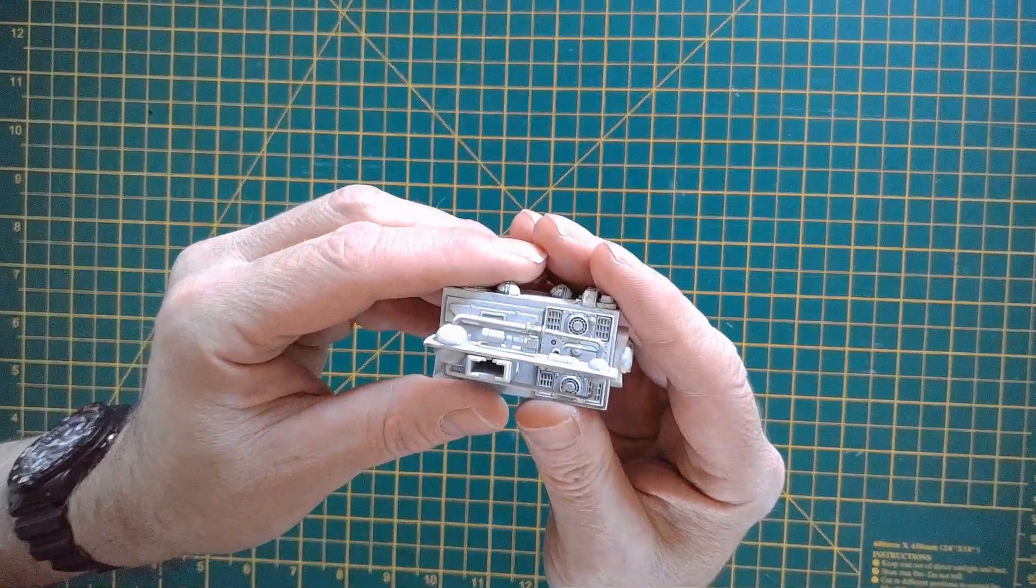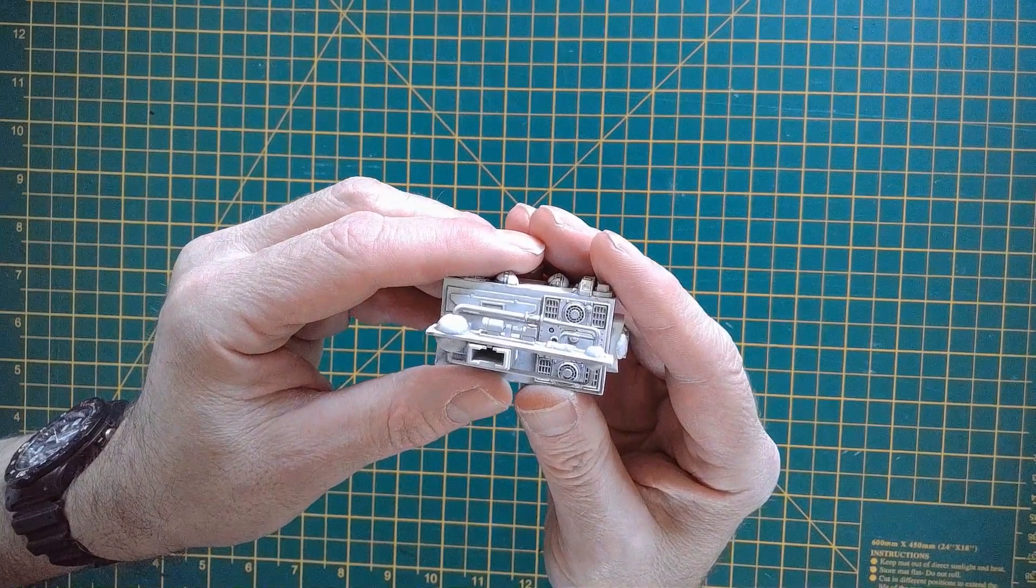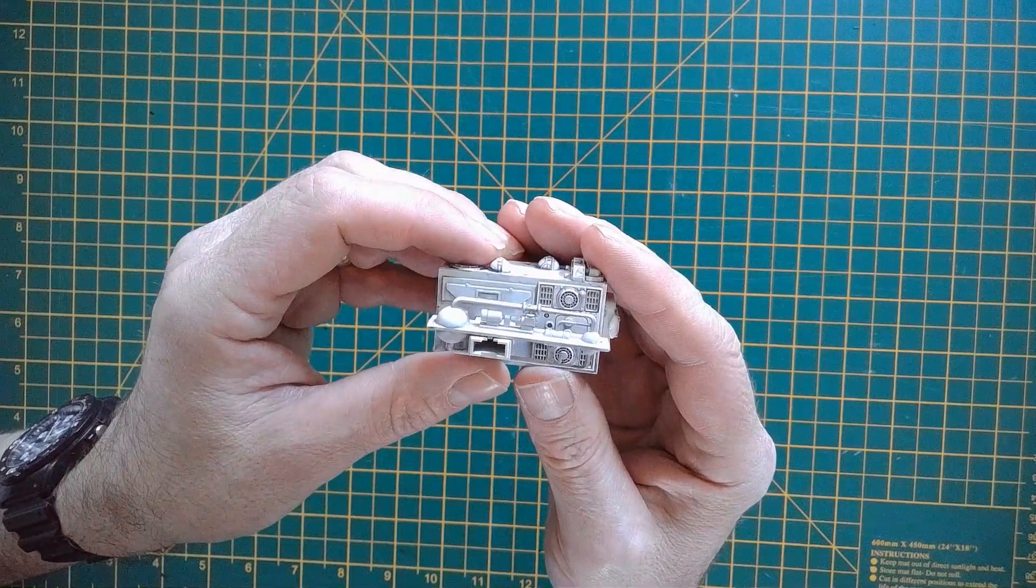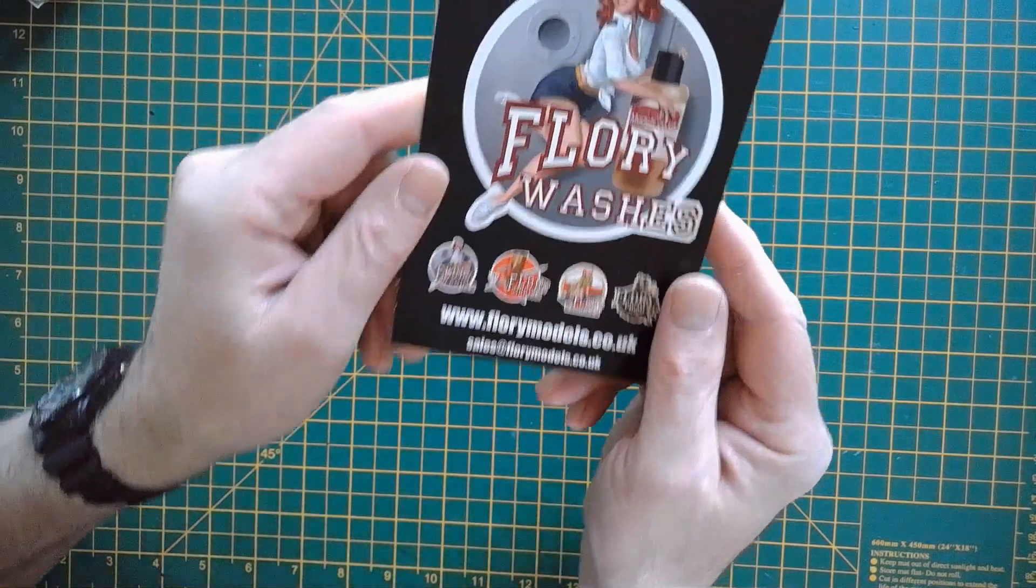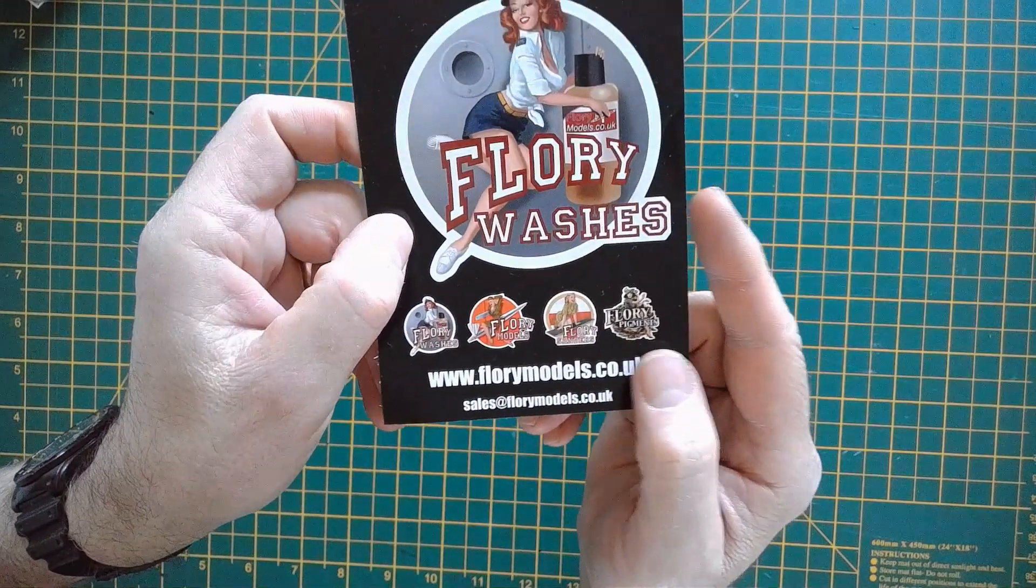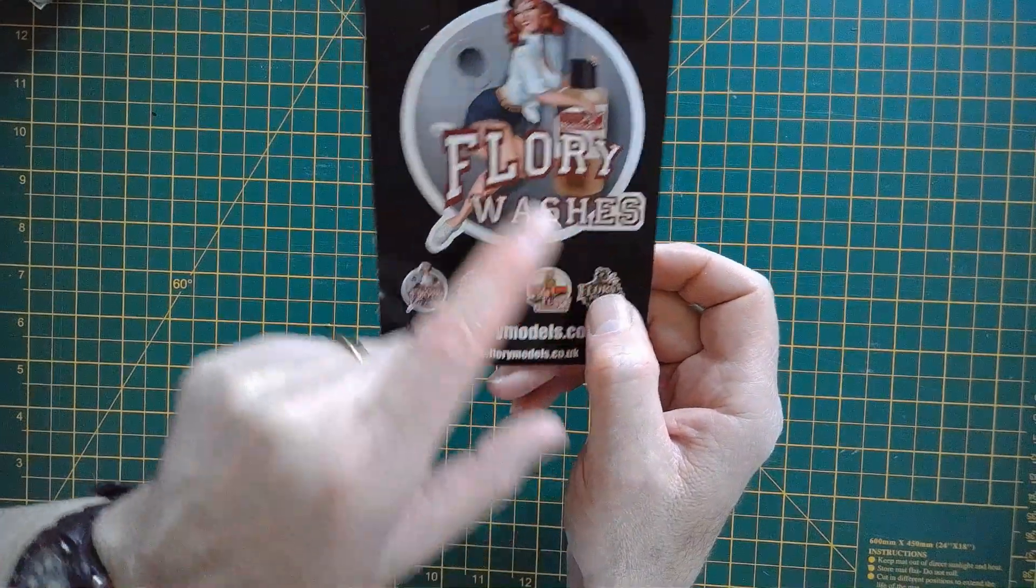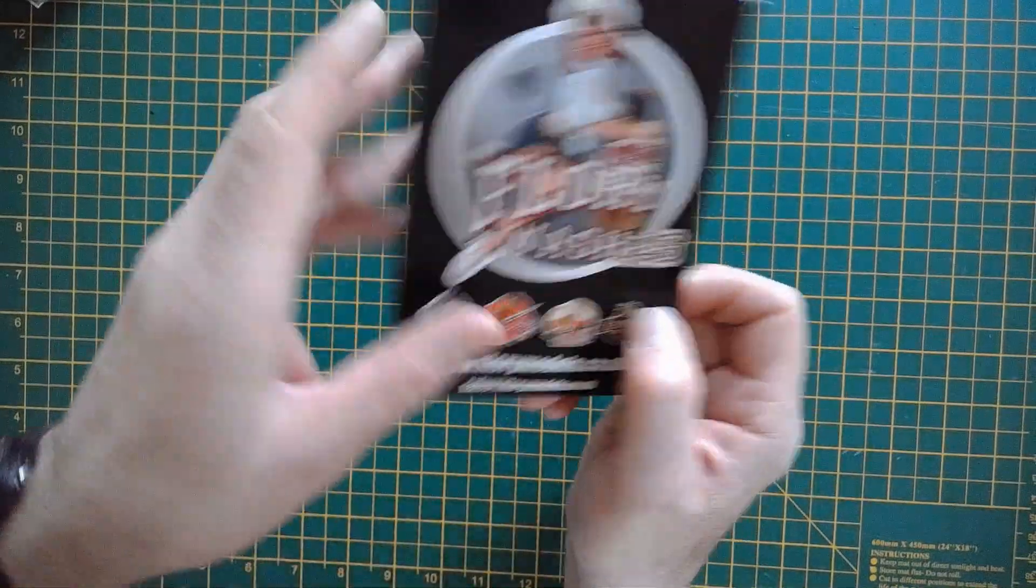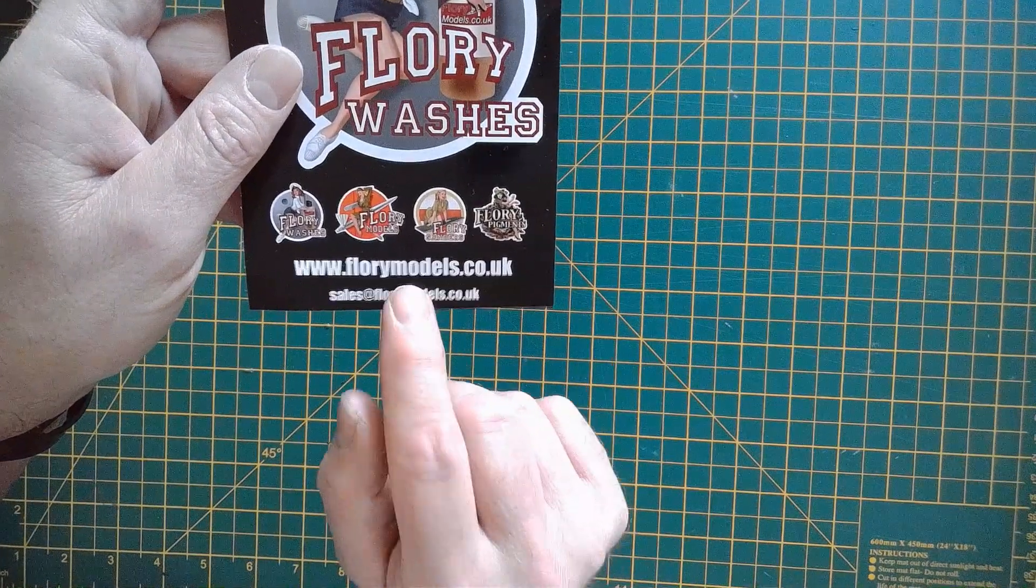This wash is a new product to me, and again thanks to my friend Mark. He used a product on his and it looked really good. This is a gray wash by a company, it's a Flory wash by a company called florymodels.co.uk. Basically, it's a pot of wash. Now it's not an acrylic, it's not an enamel, it's not an oil wash, it's not a stain, it's not an ink.